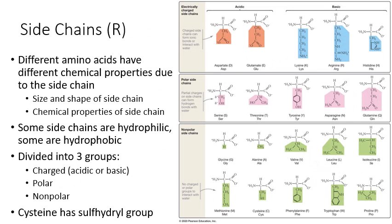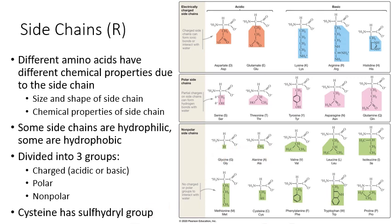We'll briefly go over the different side chains of the 20 amino acids. This diagram shows all 20 amino acids with their side chains highlighted. The backbone — the amino group, central alpha carbon, hydrogen atom, and carboxyl group — is not highlighted, and is shown as charged because they are in water. The side chain comes off the central alpha carbon and is different for each amino acid. We group amino acids based on the chemical properties of their side chains.